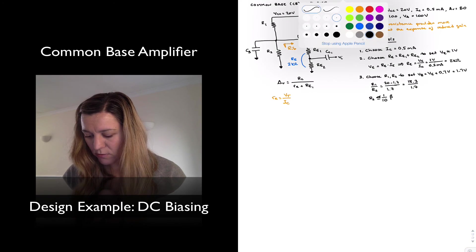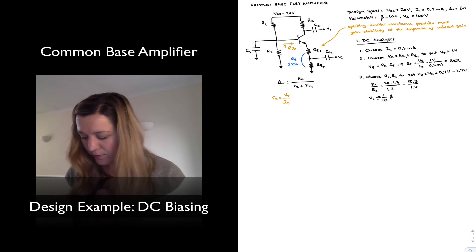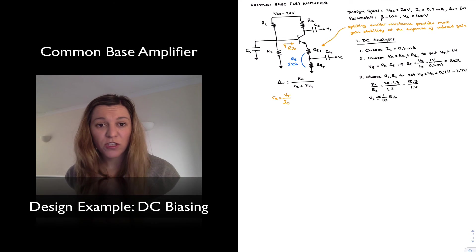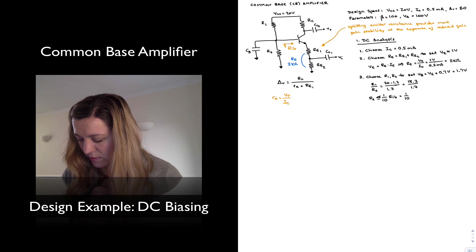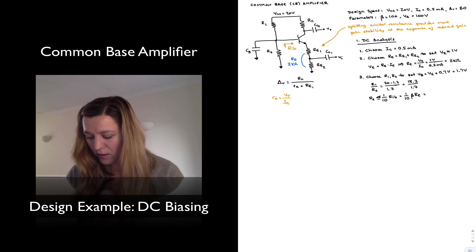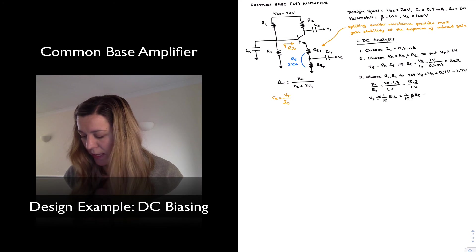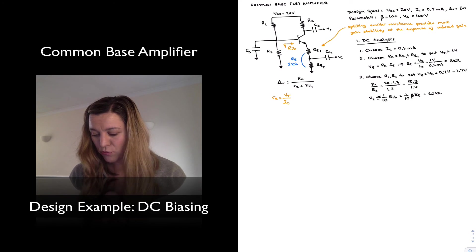well, I'm going to say one tenth of rib, which is approximately equal to beta times re. Or 10 re, which is 20k. So I'm going to... If I want R2 to be less than or equal to 20k...